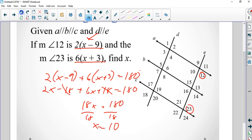If I pop 10 in here, 10 minus 9 is 1 times 2 is 2. It doesn't look like 2 degrees, but let's go with it. 10 plus 3 is 13. 13 times 6 is... that doesn't look right. That's why we check our work, because something was not right.